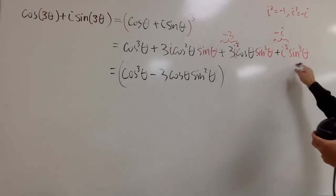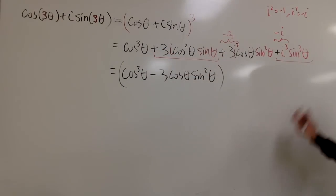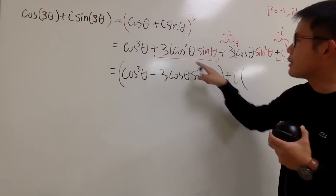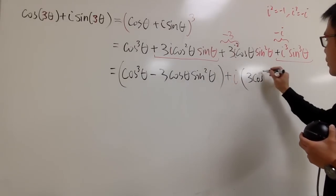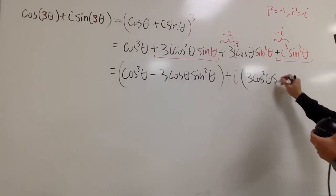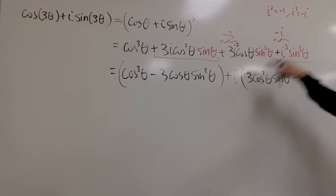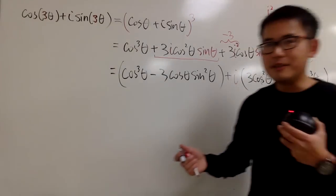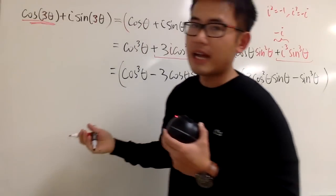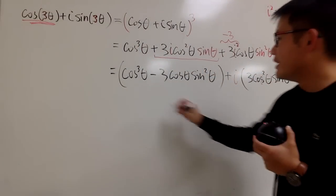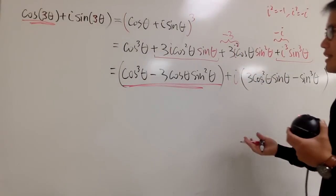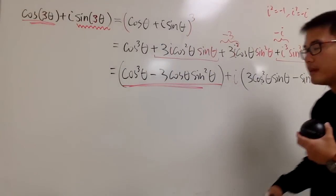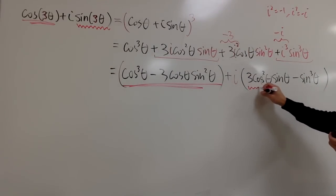These two terms have the i. So we put down plus i times, pulling the i outside: 3 cosine squared theta times sine theta, and then minus sine cubed theta. So on the left-hand side, cosine of 3 theta is the real part, and it has to equal the real part on the right-hand side. Sine of 3 theta is the imaginary part on the left, and it has to equal the imaginary part on the right.